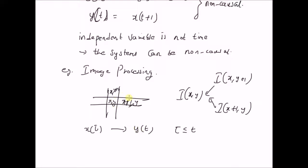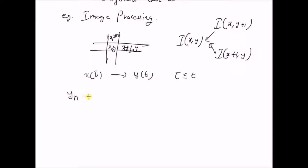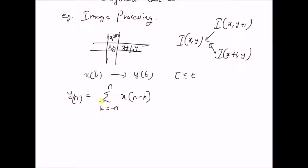Causality in space can occur from both directions — that is, from both positive and negative directions. Another example where the system is not causal is when using an averaging filter: y(n) is the average of inputs from −n to +n of the value x(n−k). When k = −n, the input is x(2n), which is a future input. Therefore, y(n) is the output of a non-causal system.